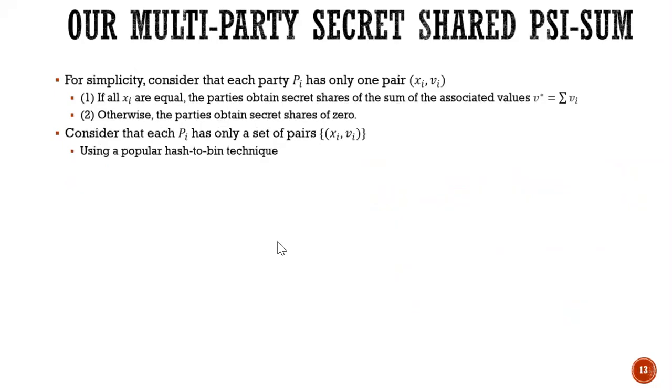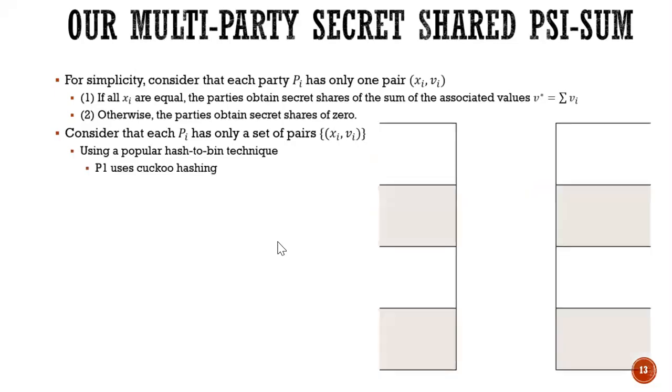So now consider if the parties have the set of pairs. So we use a very popular hash to bin technique. So P1 uses a cuckoo hashing and places his items into the bins. And because of cuckoo hashing, each bin has at most one item. All the other parties use simple hashings.